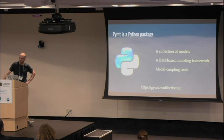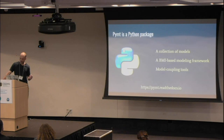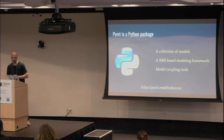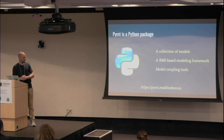For models to communicate successfully with one another, they need to speak the same language, but they also need to be able to map from one grid to another — for example, from an unstructured mesh to a structured mesh. PyMT has tools to help with that, as well as unit conversions and time interpolation. If you want to find out more, you can go to pymt.readthedocs.io to get started.